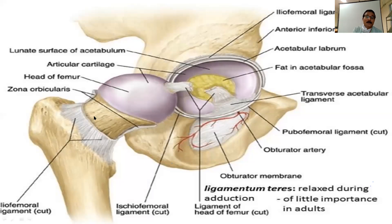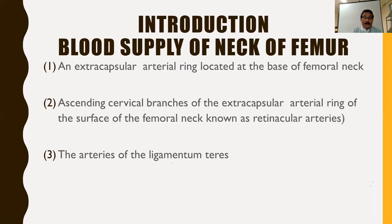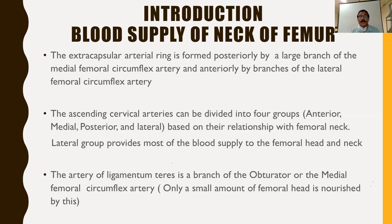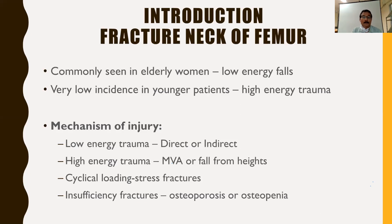So to summarize the blood supply: the extracapsular ring is formed mainly by the medial circumflex femoral artery and the lateral circumflex femoral artery. The ascending branches are most important. They form the ring, then penetrate and travel as retinacular vessels along the retinaculum, eventually becoming intraosseous. The artery of ligamentum teres from the obturator artery also contributes.